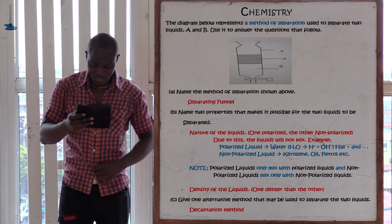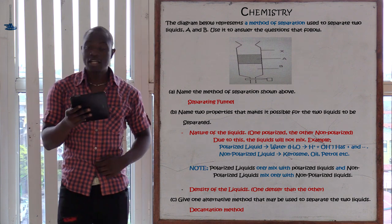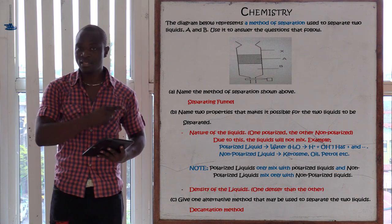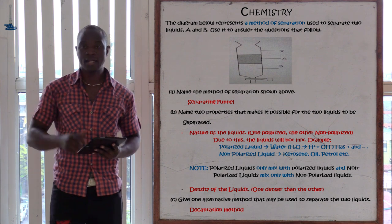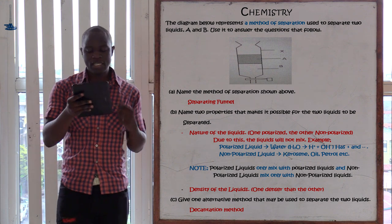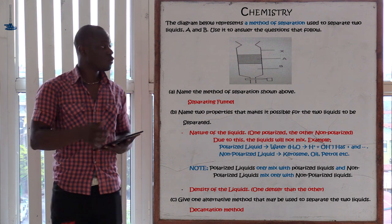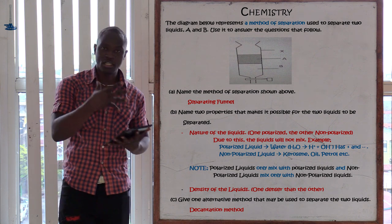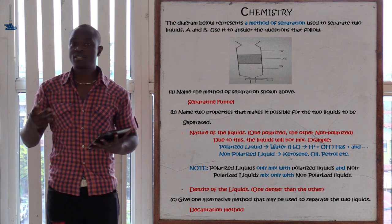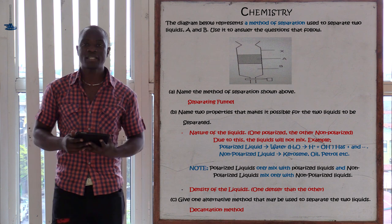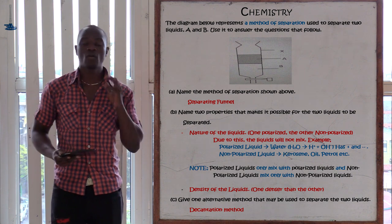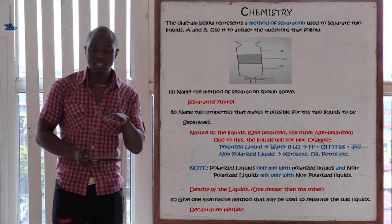The question is asking: name the method of separation shown. This apparatus is called a separating funnel, so the separation method is using a separating funnel. The next question asks: name two properties that make it possible for the two liquids to be separated. This method only separates immiscible liquids. Therefore, since it separates immiscible liquids, the first property is that the liquids must be immiscible — this method can only be used to separate liquids that form two or more layers.